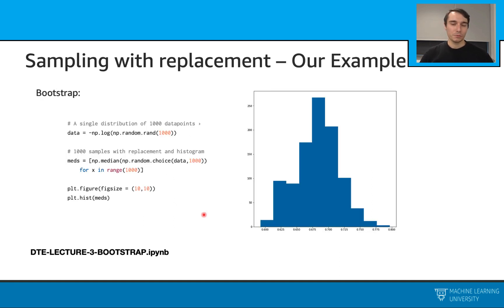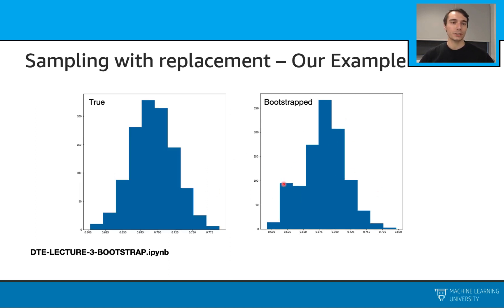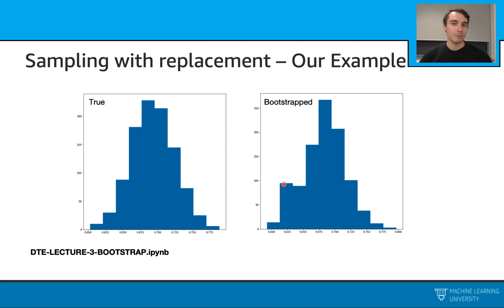When we look at the distribution of the medians from these bootstrap samples, we see a histogram that looks like this. Comparing this to one thousand independent datasets, we see some similarity. So with the bootstrapping technique, we can create a larger dataset by drawing samples with replacement from an original dataset and essentially preserve the same distribution. Later we will use this bootstrapping technique with assembled models to create multiple synthetic datasets.